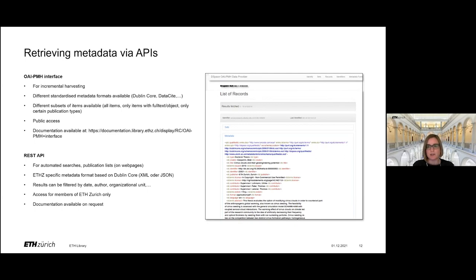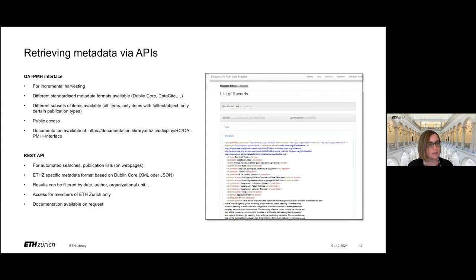The other API we offer is a REST API, which you can use for automated searches or for generating publication lists. For example, if you are at ETH and have your own group website that is not already in the ETH content management system but in a separate one, you could build an integration with the research collection using this API. The metadata is delivered in our internal format that is based on Dublin Core but also contains certain fields defined internally. You can filter your results by different criteria. If you are a member of ETH and want to access this API, please contact us and we will deliver the documentation.